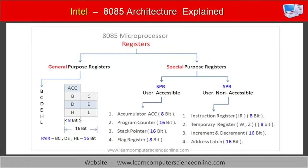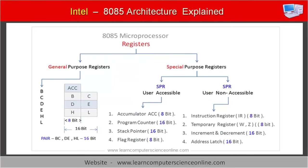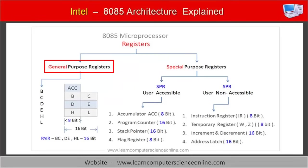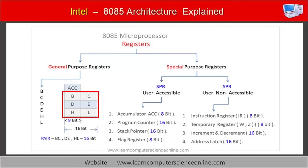The CPU makes use of different types of registers placed inside the processor chip. CPU registers can be grouped into two types: general purpose registers and special purpose registers. General purpose registers are used to store data in temporary memory during program execution. The 8085 processor has six general purpose registers that can each store 8 bits of data, named B, C, D, E, H, and L.